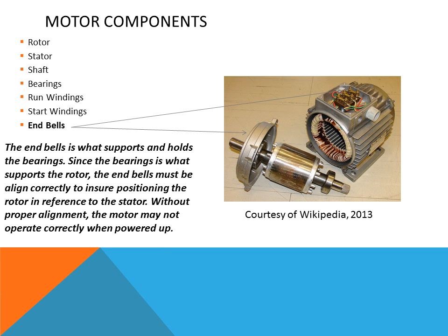The end bells support the bearings and close the ends of the motor. They also support the shaft. The end bells are very important because their position can keep the motor from operating correctly, or cause the rotor to rub against the stator if not aligned correctly.